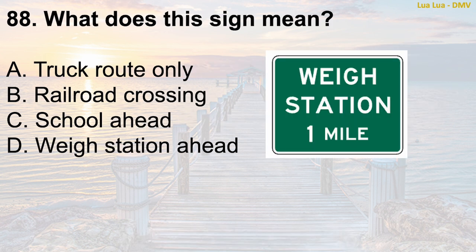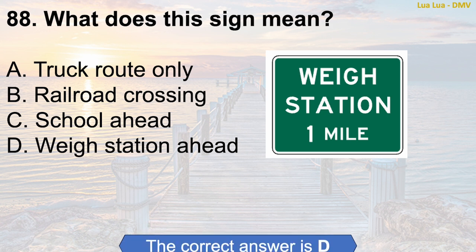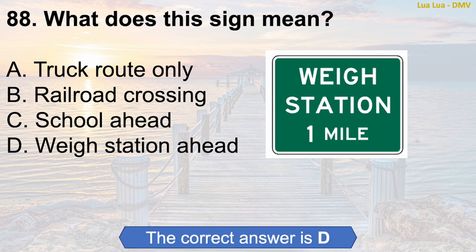Question 88: What does this sign mean? A. Truck route only. B. Railroad crossing. C. School ahead. D. Way station ahead. The correct answer is D: Way station ahead.